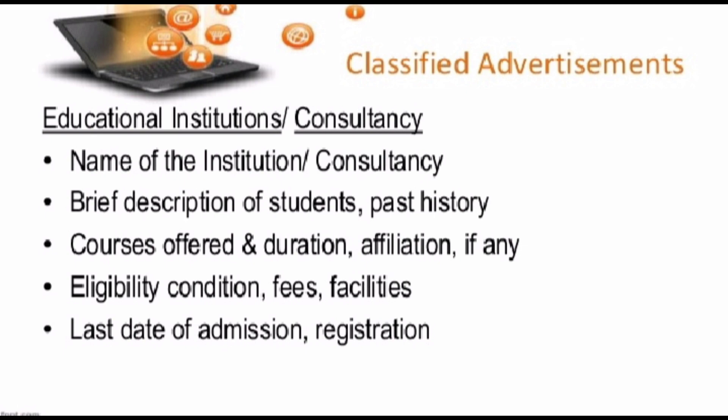If you want to give an advertisement for an educational institution or consultancy, mention the name of the institution or consultancy, a brief description of students' past history, courses offered and duration, affiliation if any, eligibility conditions, fees and facilities provided, last date of admission and registration, as well as the contact number and address of the establishment.